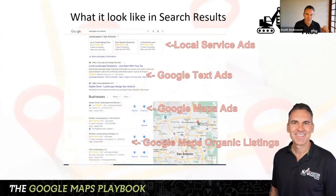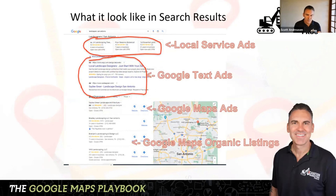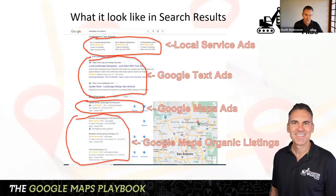This is what it looks like right now. Someone types in, let's say, 'landscaper San Antonio' — you get those local service ads right up top. Then you have your regular Google text ads, then Google Maps ads, and then the free Google Maps organic listings, which I'll show you more about how to rank in. Now you can see the full layout of the different types of search.